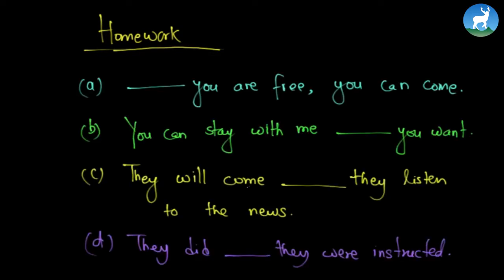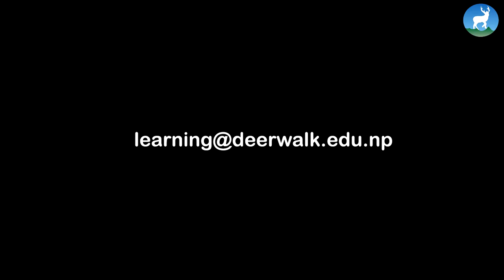With this, we have come to the end of today's class. I'm going to give you some homework. Fill in the blanks using the proper kind of connectives. We have four questions with two ideas each — you need to fill the blank with the conjunction. You need to find out whether the connectives of reason and purpose, or the connectives of concession, suit these blank spaces. If you have any questions or suggestions regarding this lecture, feel free to write us at learning@deawalk.edu.np. Thank you.